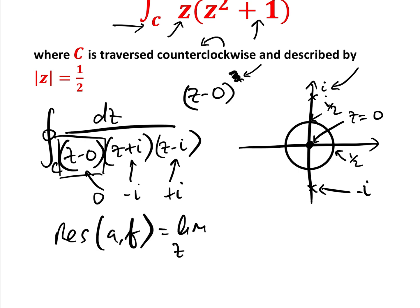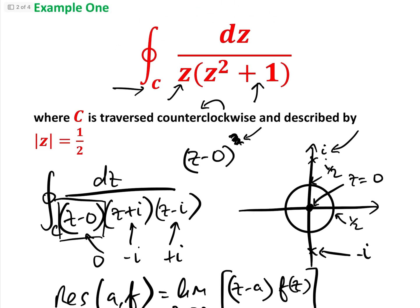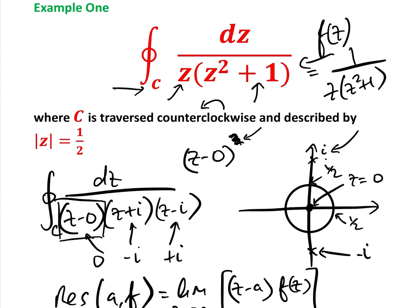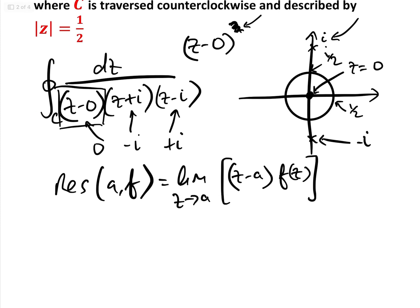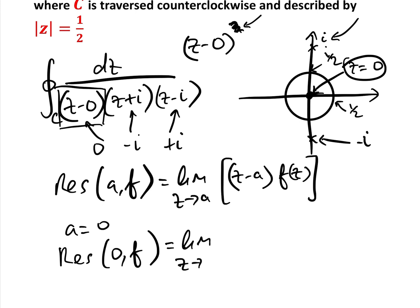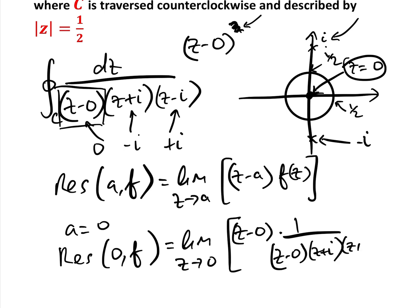The simplified residue formula is: Res(a, f) = limit as z→a of (z − a)·f(z). We let f(z) = 1 / [z(z² + 1)] and set a = 0. So Res(0, f) = limit as z→0 of (z − 0) × 1 / [(z − 0)(z + i)(z − i)].